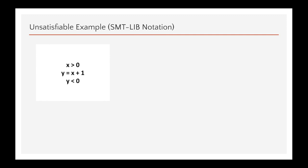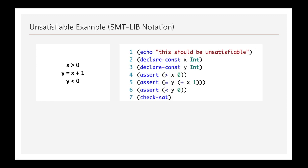So, here's an example of a formula that is unsatisfiable. We have x greater than 0, y equal to x plus 1, and y less than 0. This is the corresponding Z3 script. So, if we run this, we are doing check-sat and we'll get unsat. So, if we can change this to make this satisfiable, we would do y is greater than 0.